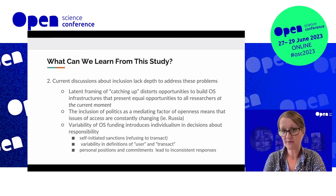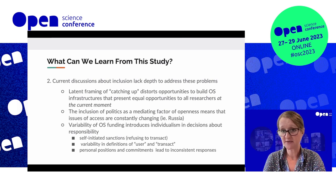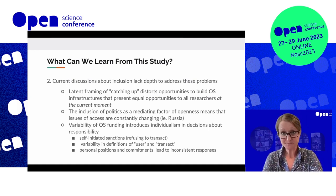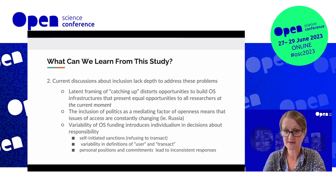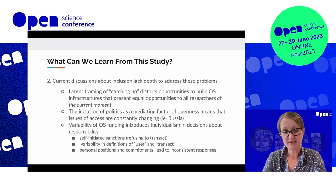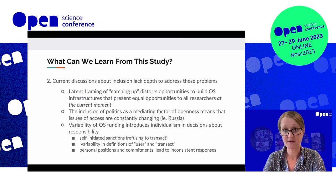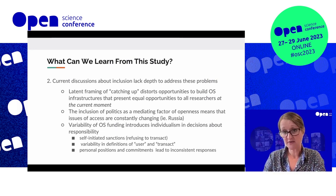What became apparent from not only this study but also the desktop study I mentioned earlier is that there's a lot of confusion as to how open resources need to transact with countries that have geopolitical problems. And that variability in open science funding introduces individualism in decisions about responsibility. So because there is a lack of consistent and coherent decision-making around these issues from the open science community, we are seeing issues of self-initiated sanctions — being risk-averse and refusing to transact. We're seeing variabilities in definitions about users, with some open science resources following the spirit of the law rather than the letter of the law. And we're seeing that personal positions and commitments can lead to inconsistent responses and, by introducing personal decision-making in decisions about access to open science tools, we can introduce biases.